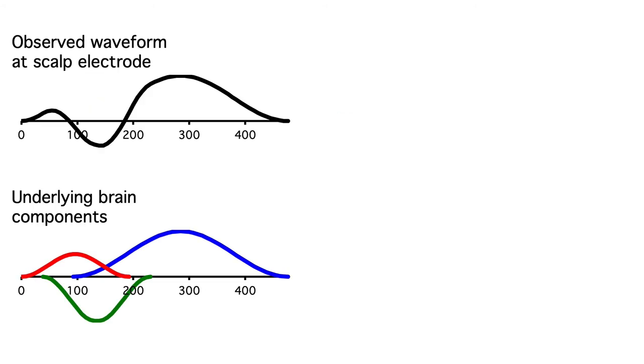Here's another example. You can see that we have three components and three peaks. But notice that the first component peaks at 100 milliseconds, whereas the first peak in the scalp waveform is at 50 milliseconds.